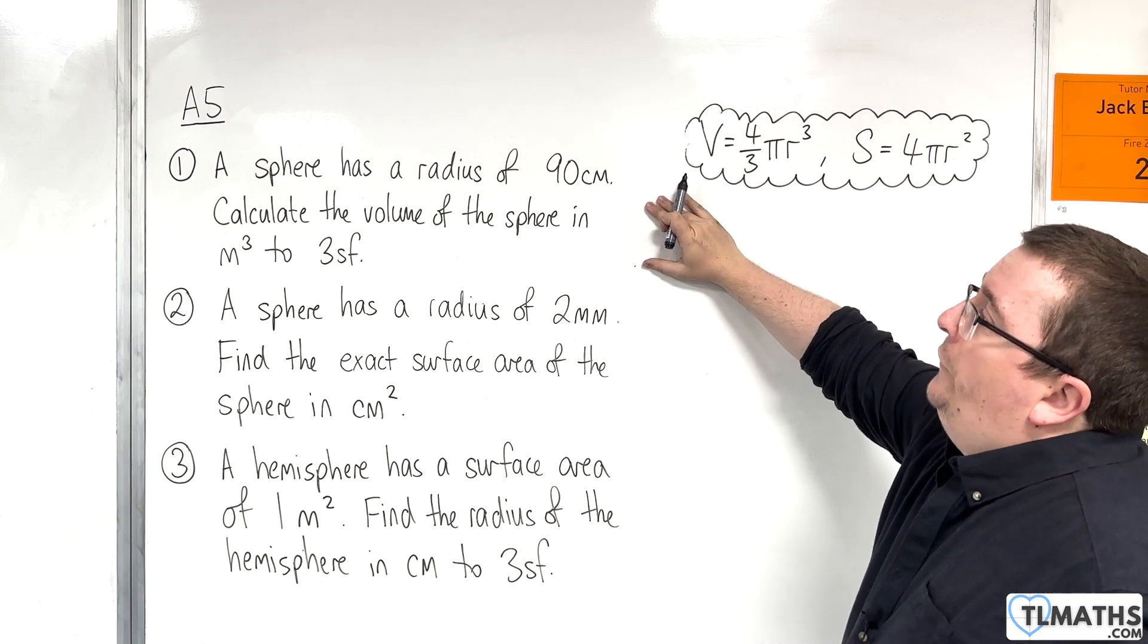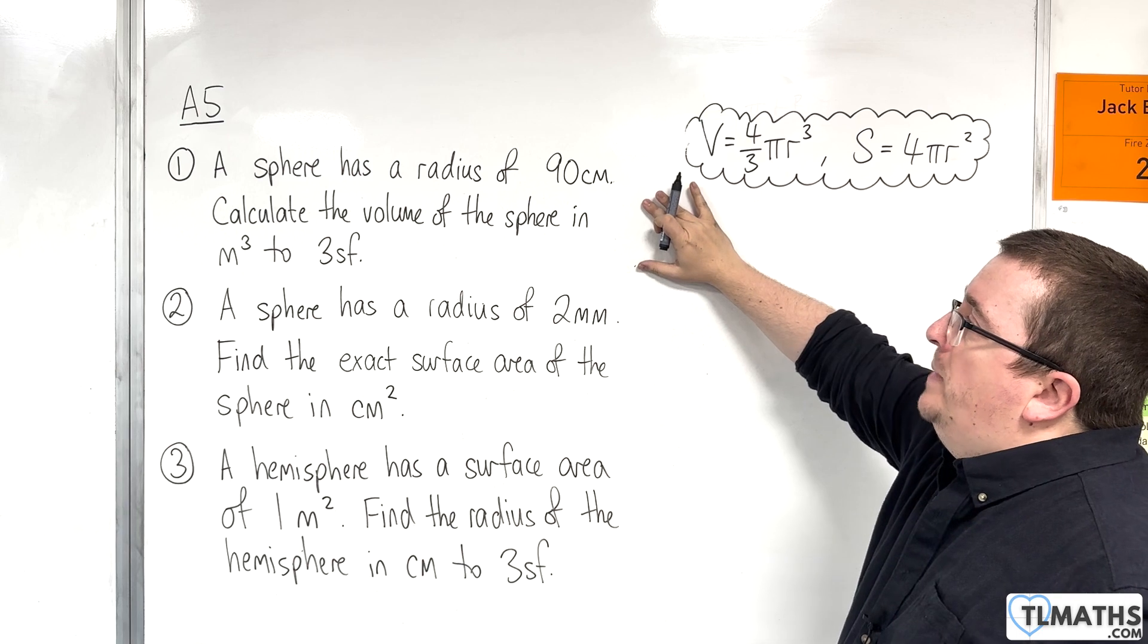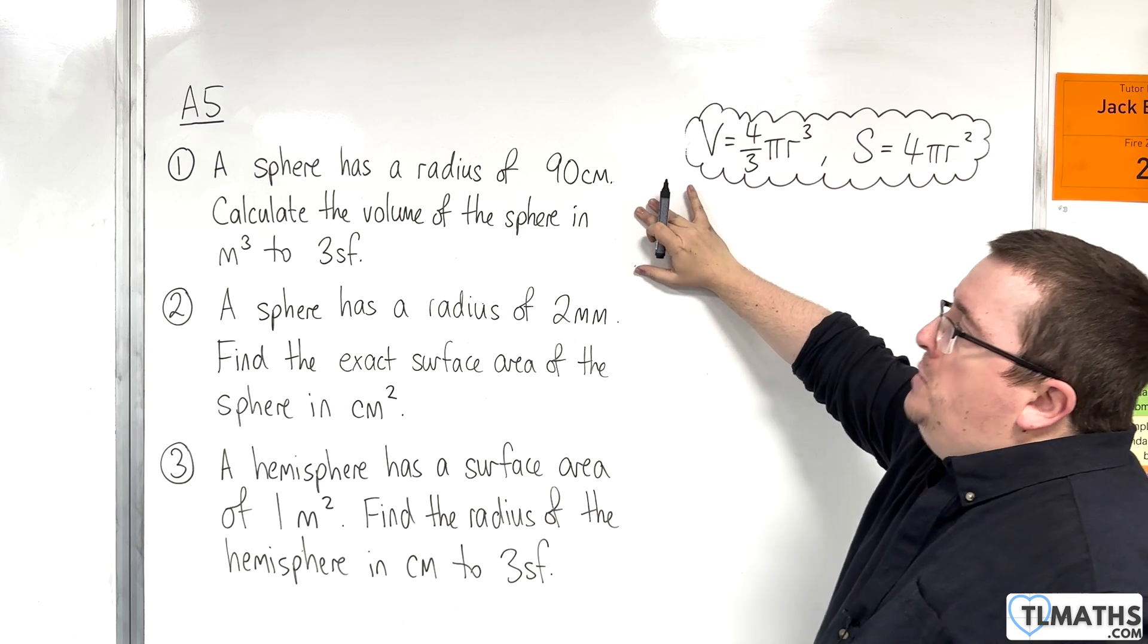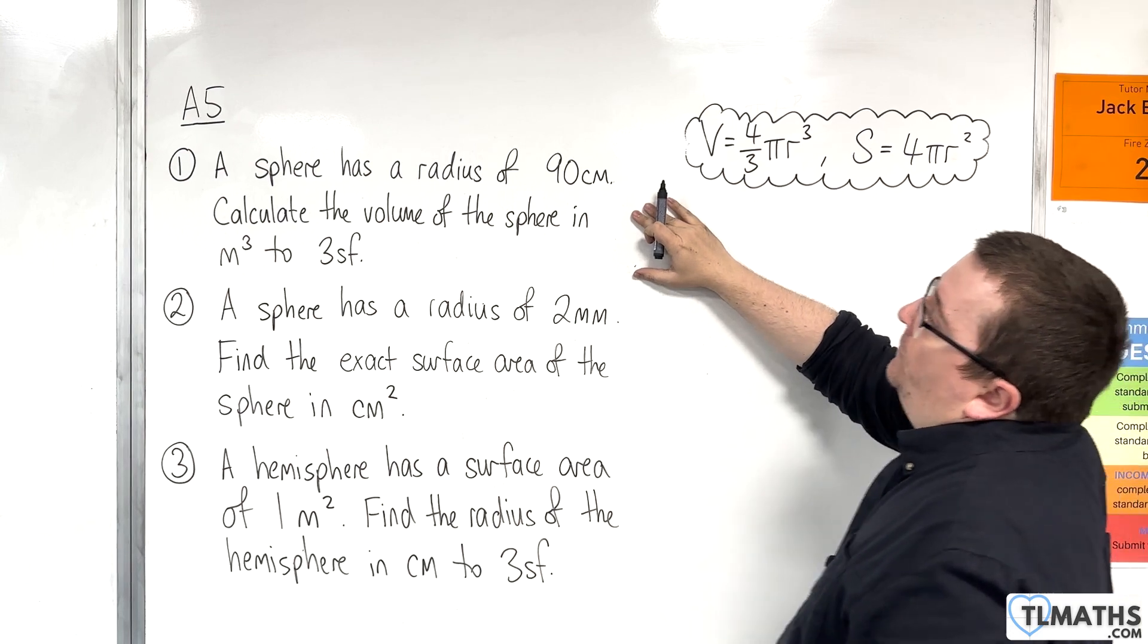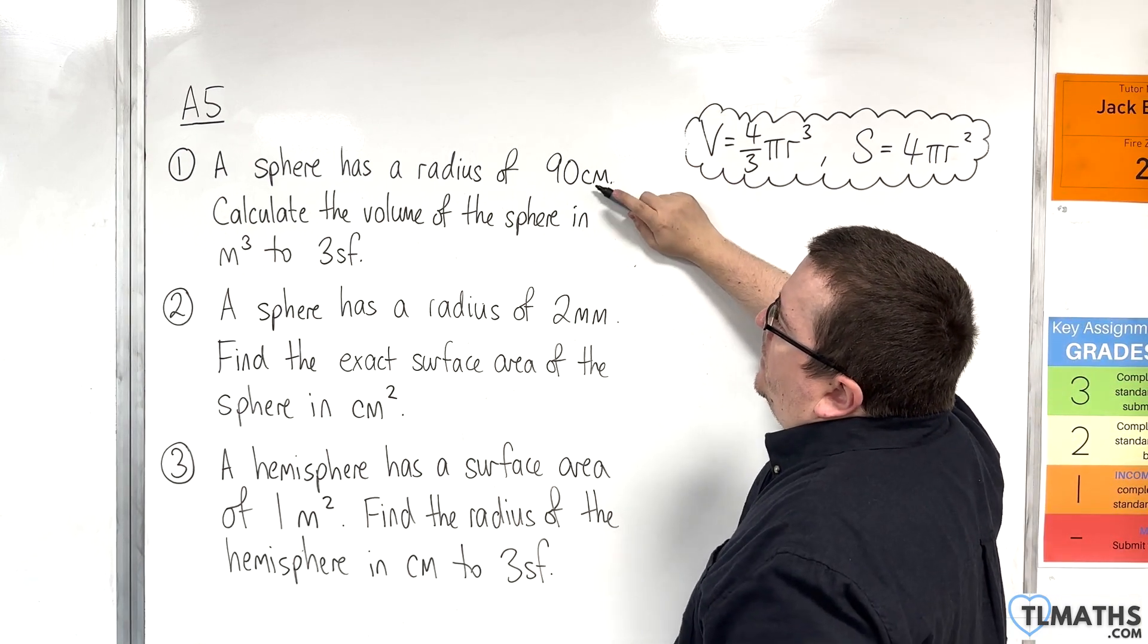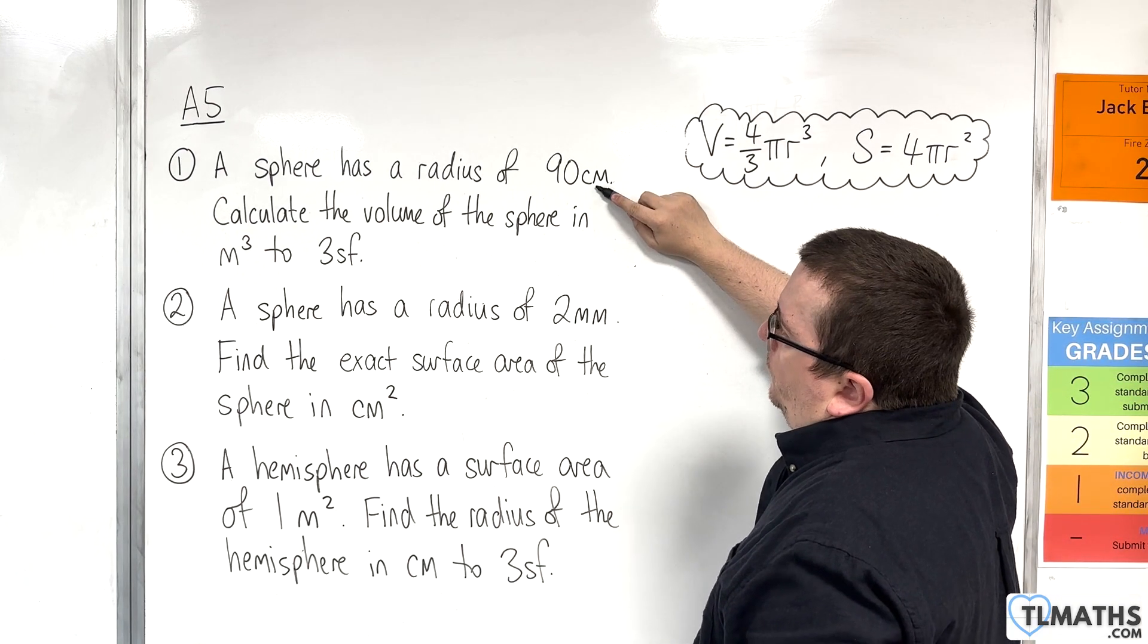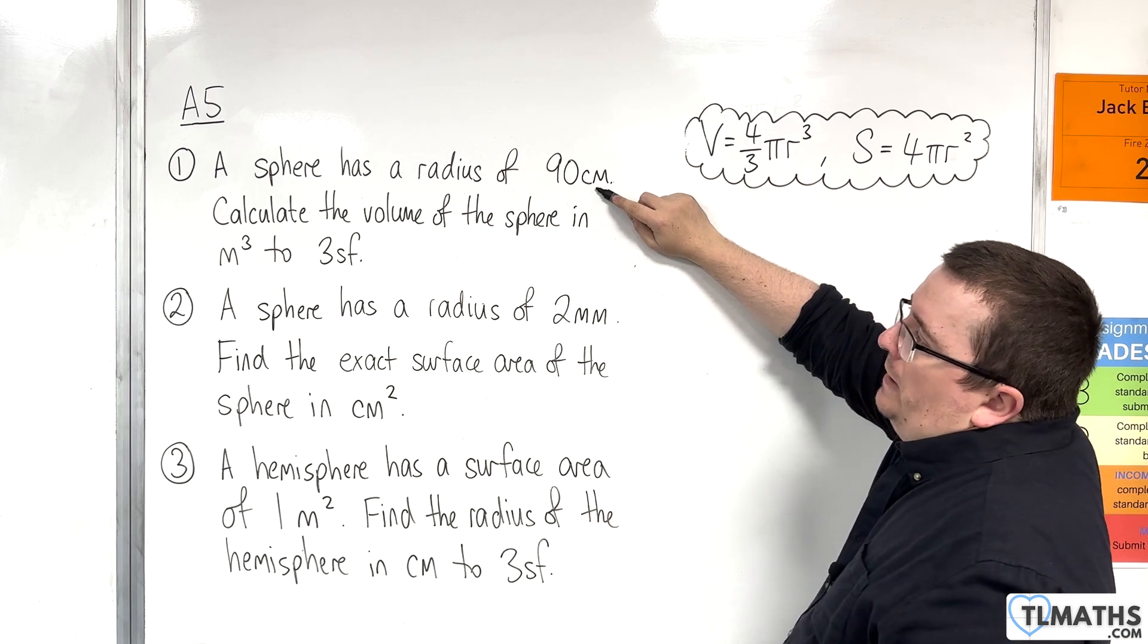Number one, a sphere has a radius of 90 centimeters. Calculate the volume of the sphere in cubic meters to three significant figures. So first of all, it makes sense to convert this into meters. So that's 0.9 meters.